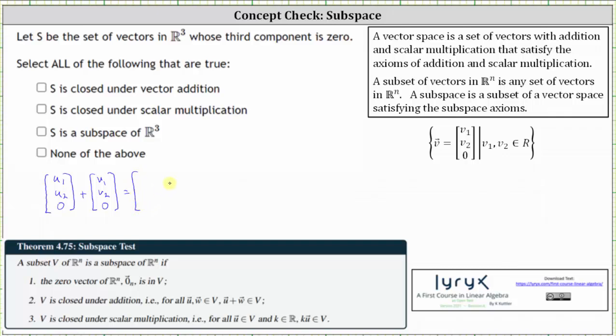And then when we sum the vectors, the first component is U sub one plus V sub one. The second component is U sub two plus V sub two. The third component is zero plus zero, which is zero. Notice the result is a vector in R³, where the third component is zero, verifying S is closed under addition.